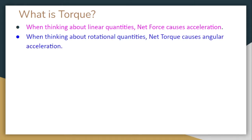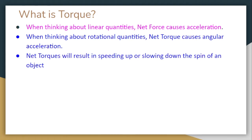And with torque, it's also going to have the ability to have a net torque, which is going to cause an angular acceleration. Net torques are going to result in speeding up or slowing down the spin of an object. And we can find that net torque by adding up all of the torques that are happening to an object, similar to what we would do with net force. We would add up all the forces acting on that object.